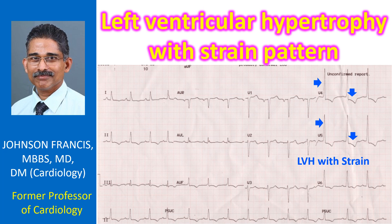LVH with strain pattern usually occurs in pressure overload of the left ventricle, as in systemic hypertension or aortic stenosis. A similar pattern may also occur in long-standing severe aortic regurgitation, though the usual pattern in aortic regurgitation is left ventricular volume overload.